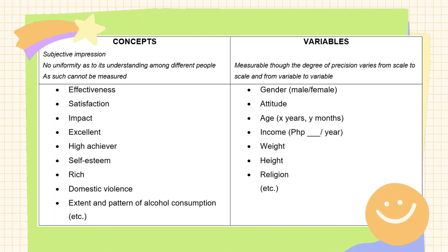Whereas for variables, these are measurable, though the degree of precision varies from scale to scale and from variable to variable. For example, gender could be either male or female; attitude; age in terms of years or months; income measured per annum or per month; weight, height, religion — these are all variables because there is a certain degree of measurability.